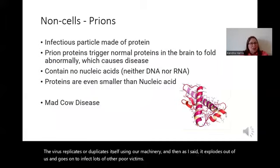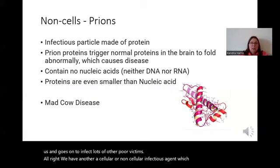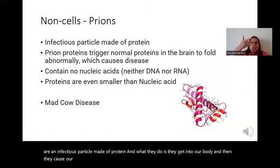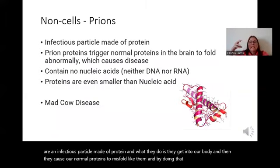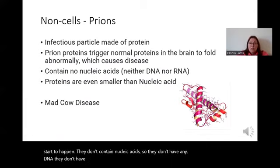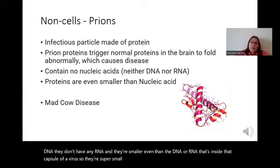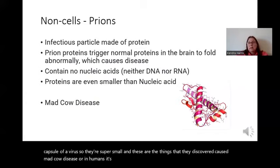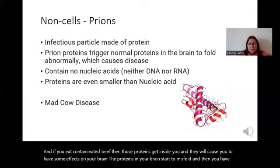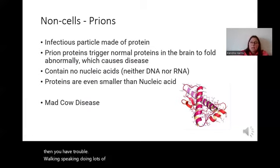We have another acellular infectious agent, which is prions. Prions are an infectious particle made of protein. What they do is get into our body and cause our normal proteins to misfold like them. By doing that misfolding, it creates a disease — the proteins can't work, and when we don't have those proteins, bad things start to happen. They don't contain nucleic acid — no DNA, no RNA — and they're smaller even than the DNA or RNA inside a virus's capsid. These cause mad cow disease, or in humans it's called Creutzfeldt-Jakob disease. If you eat contaminated beef, those proteins get inside you and cause your brain proteins to misfold, giving you trouble walking, speaking, and doing lots of normal functions.